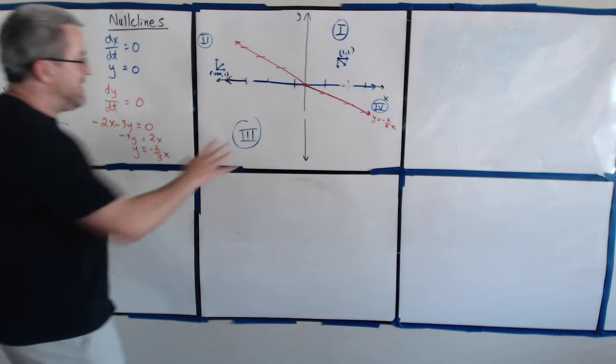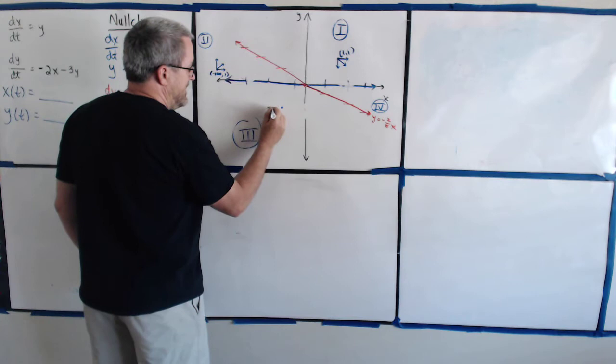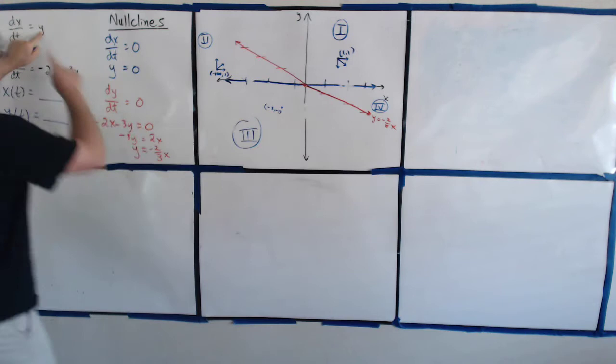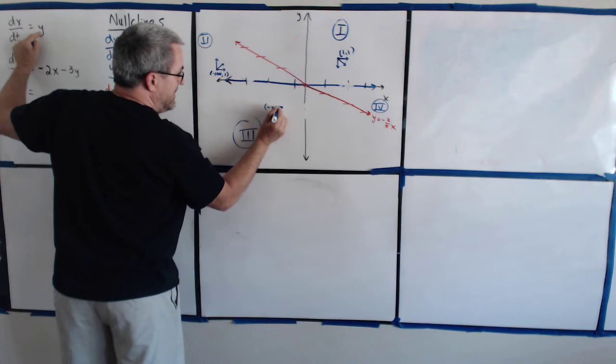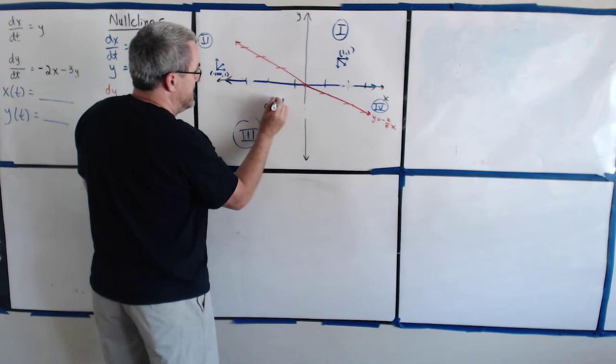What about region three? Region three is large, so let's use the point negative two, negative one. dx/dt equals y — y is negative one, so dx/dt is negative, meaning x is going in that direction (to the left). If x is negative two and y is negative one: negative two times negative two is positive four, minus three gives about positive seven. With dy/dt positive, y is going upward. Overall, the trajectory in region three goes left and up.